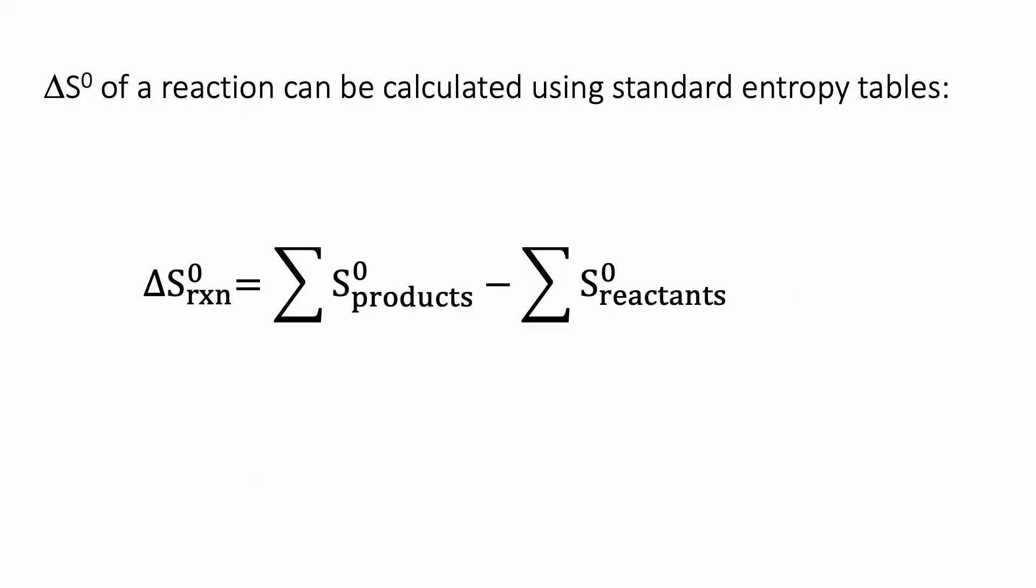The change in entropy of a reaction at standard state can be calculated just by pulling values out of the standard entropy tables in the back of your book. And basically, to calculate the change in entropy of a reaction, you're first going to sum up the entropies of all of the products,